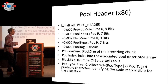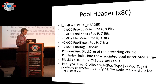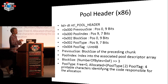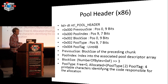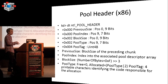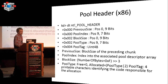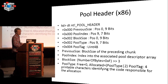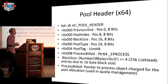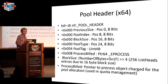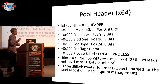To describe allocated memory there is a pool header structure with fields: previous size, pool index, block size, pool type, and pool tag, which describe the size of current and previous chunks. Pool index stores the index of the pool where the chunk resides. The pool header on 32-bit and 64-bit is not the same — on 64-bit there is an additional pointer to the process, and the granularity is 16 bytes instead of 8.